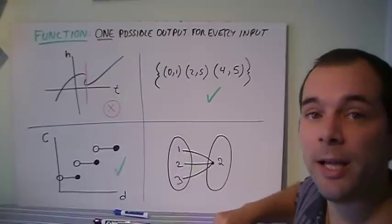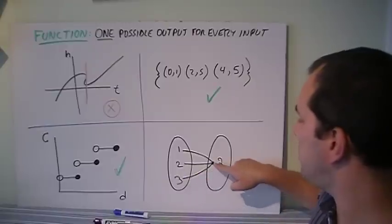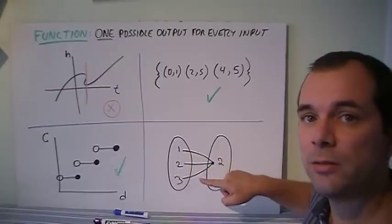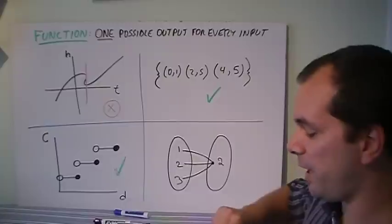And lastly, this mapping diagram. I have 1 goes to 2, 2 goes to 2, 3 goes to 2. Is this a function? Well, yes, it is a function because for every input, there's only one choice of outputs.